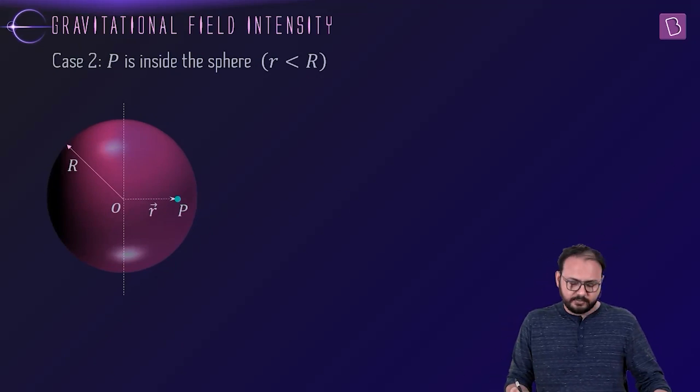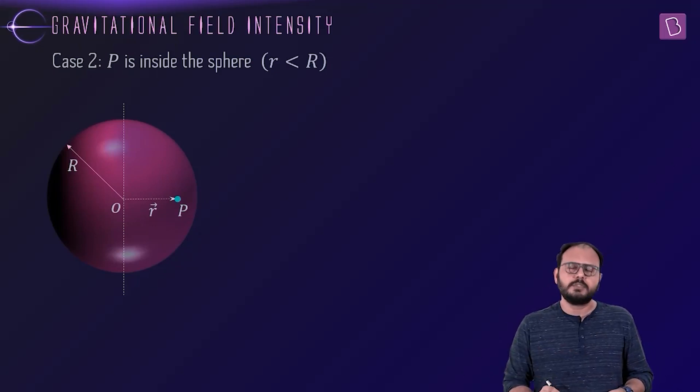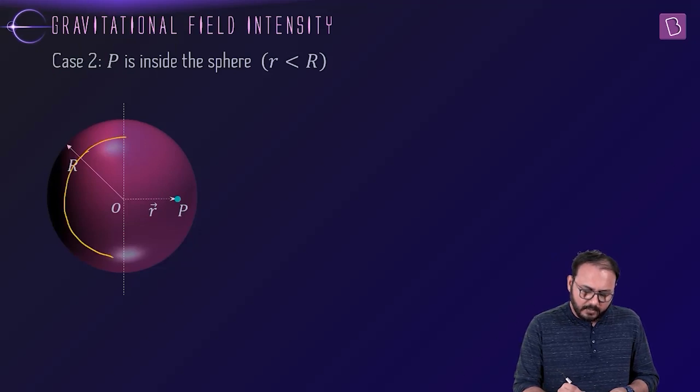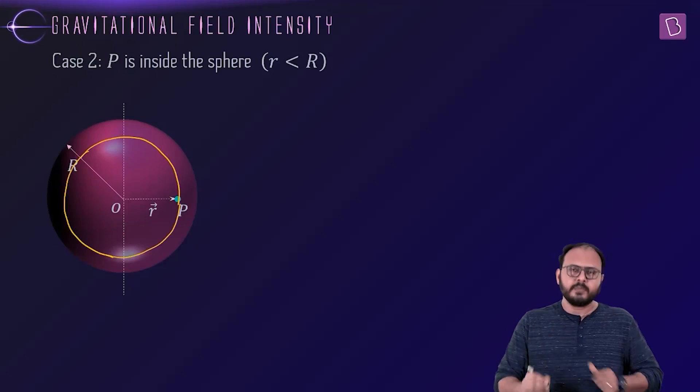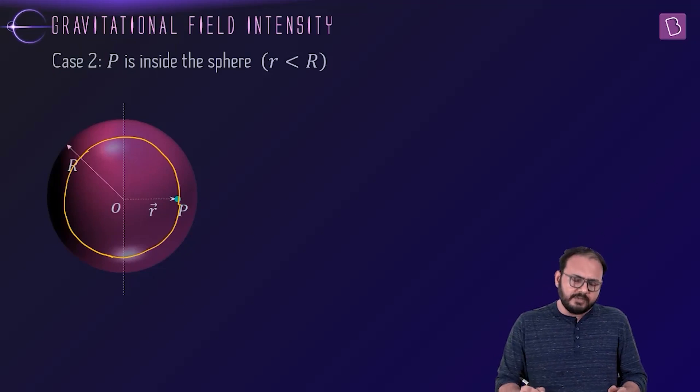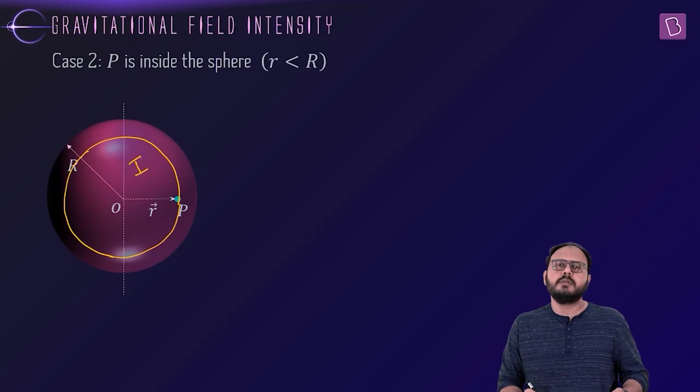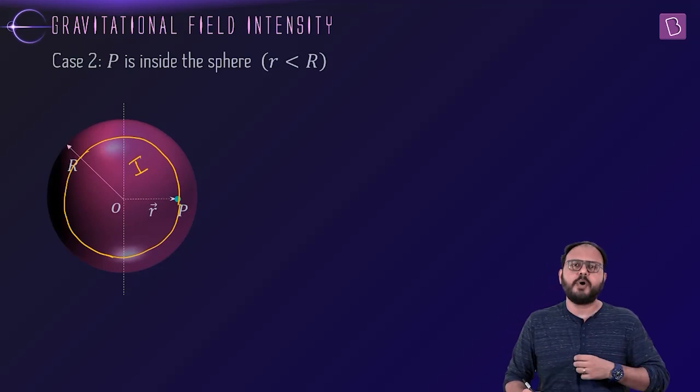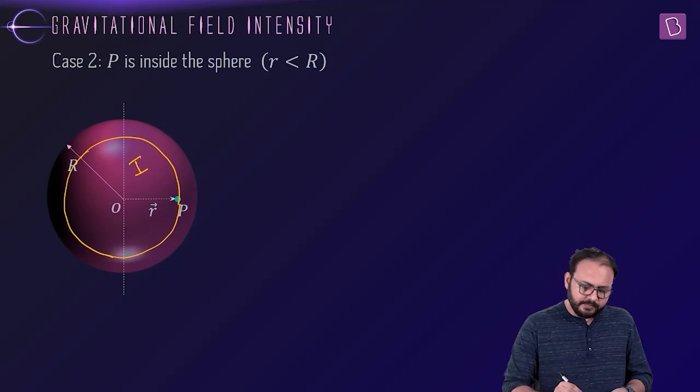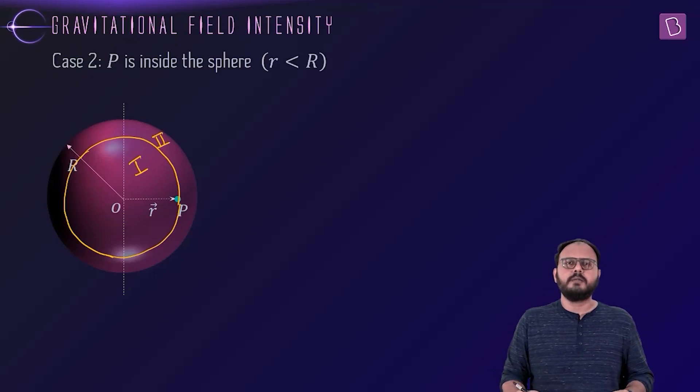The point is inside now. Draw a sphere of radius r, small r. Let's divide the full big sphere into two parts: part 1 and part 2.